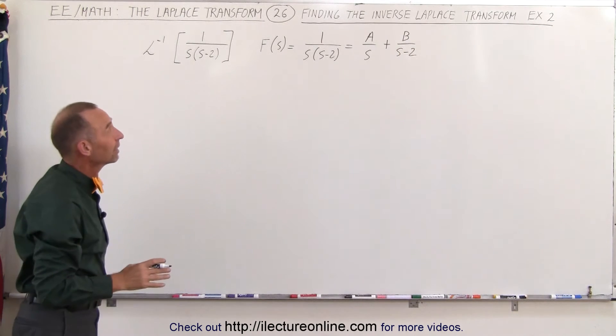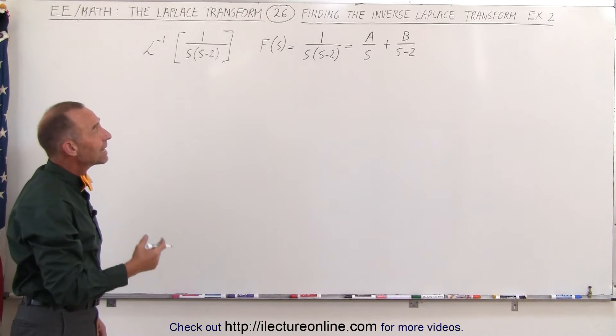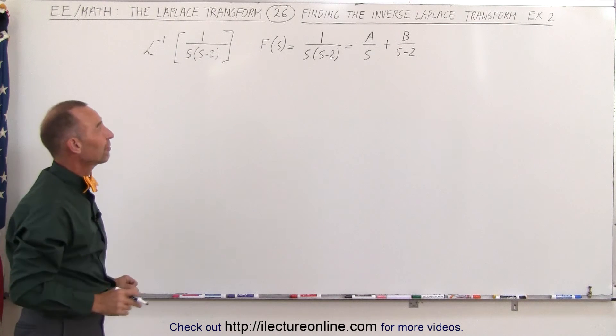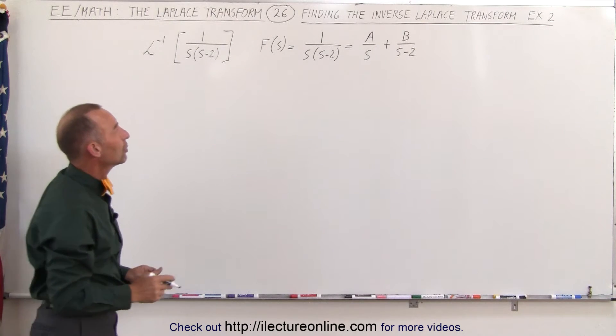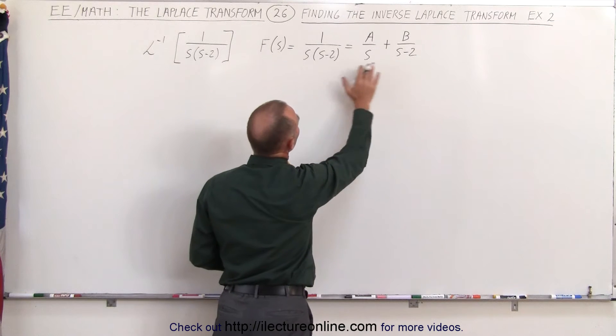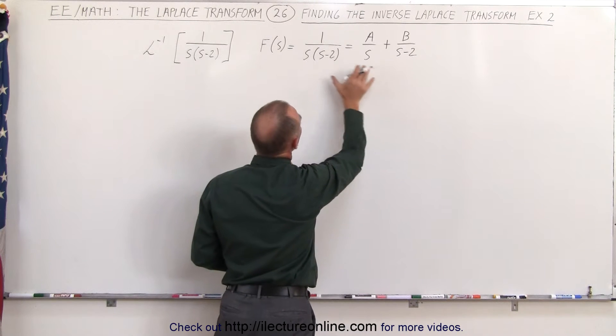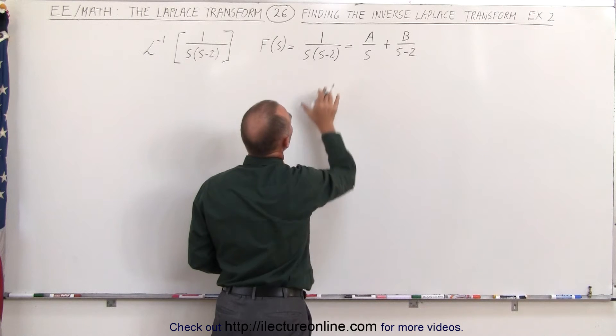So next what we're trying to find here is the values of a and b so I can write it as two separate fractions. What I can do here is simply multiply both sides of the equation by the common denominator s times s minus 2.